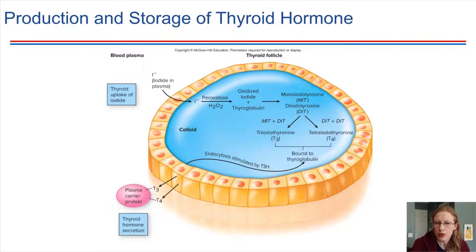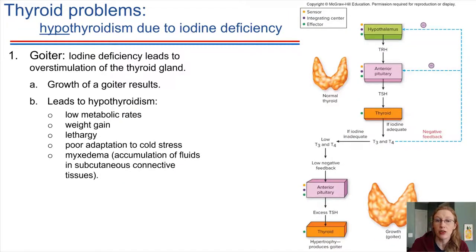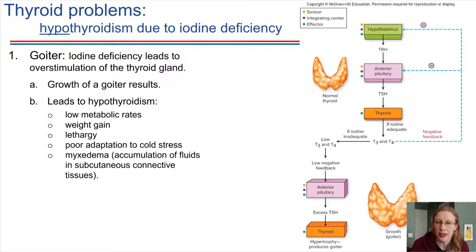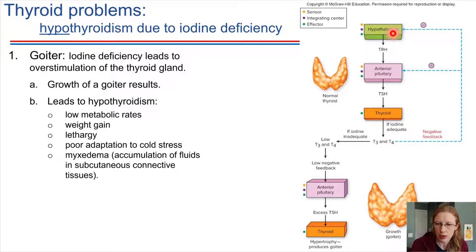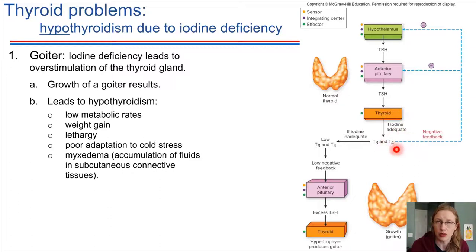Thinking about problems with the thyroid gland — one issue is simply not having enough iodine in the diet. Ordinarily, the hypothalamus triggers the anterior pituitary to release thyroid stimulating hormone, which binds at the thyroid and causes T3 and T4 to be released. If these levels start to get too high, there's a negative feedback control system — these hormones negatively feed back to the anterior pituitary and hypothalamus, decreasing the amount of TSH produced.